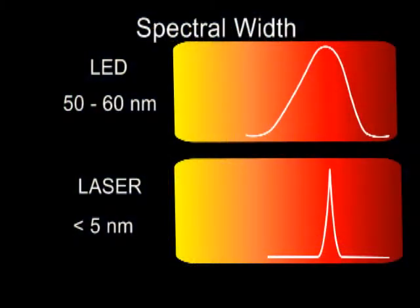Spectral width is a measure of the extent of a spectrum. For a source, it is the width of wavelengths contained in the output at one half of the wavelength of peak power. Typical spectral widths are 50 to 160 nanometers for an LED and less than 5 nanometers for a laser diode.